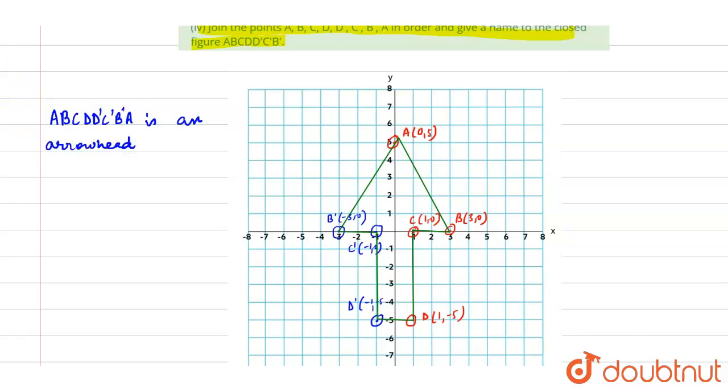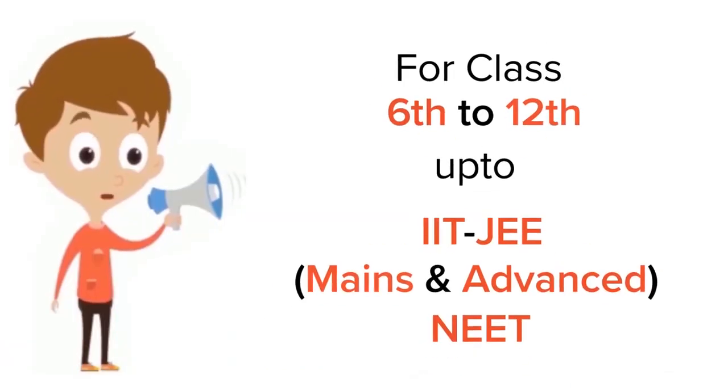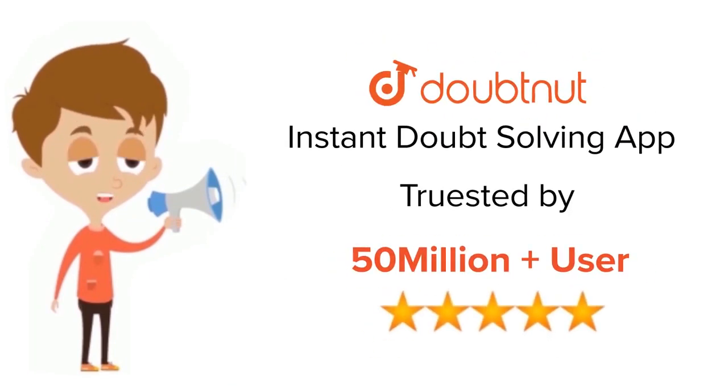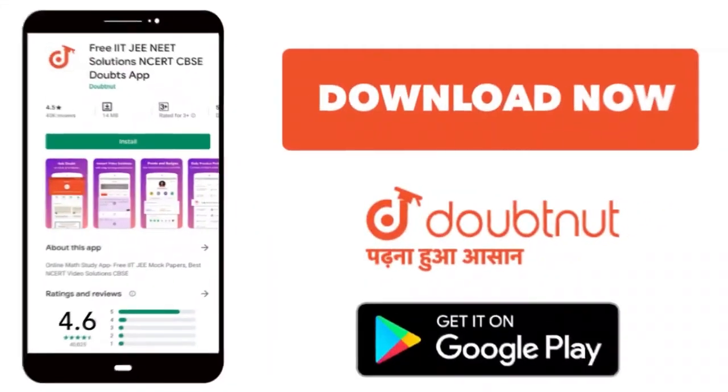Also the coordinates for B' is -3, 0, for C' is -1, 0 and for D' it is -1, -5. Thank you. For class 6 to 12th, IIT and NEET level, trusted by more than 5 crore students, download Doubtnet app today.